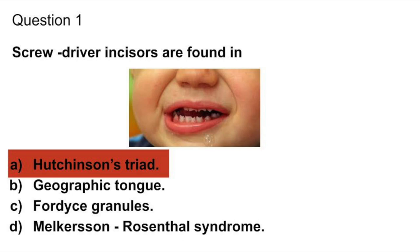Gumma is found in tertiary syphilis. Small round superficial lesions in the mouth which coalesce to form tracks called snail tract ulcers are found in secondary syphilis. Snail tract lesions or mucous patches are found in secondary syphilis.